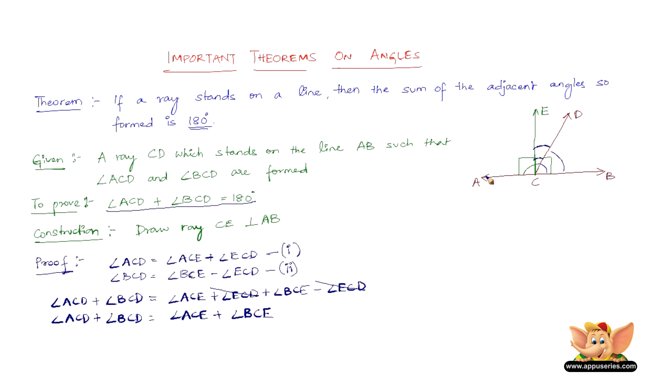Now the most important thing here is, we know that the ray CE is perpendicular to AB and therefore it is at 90 degrees to AB on both sides. So angle ACE is 90 degrees. So angle ACD plus angle BCD is equal to angle ACE plus angle BCE which are nothing but 90 degrees plus 90 degrees. So angle ACD plus angle BCD equals 180 degrees.